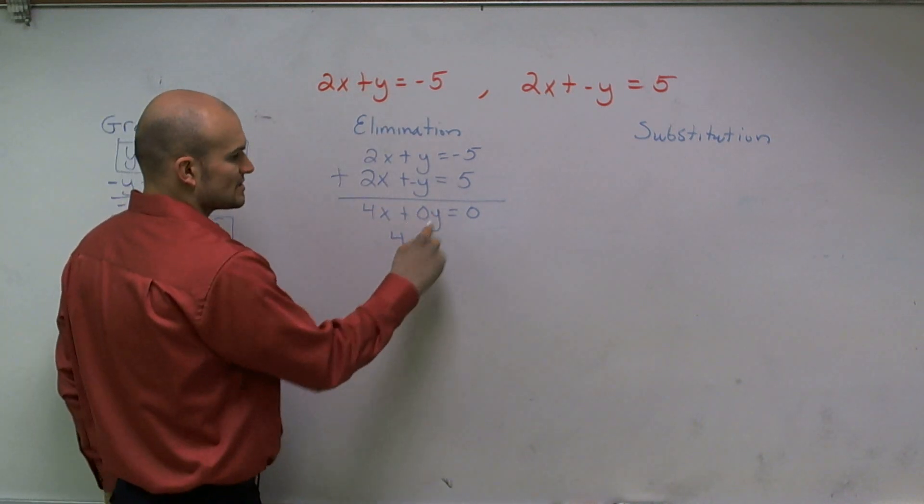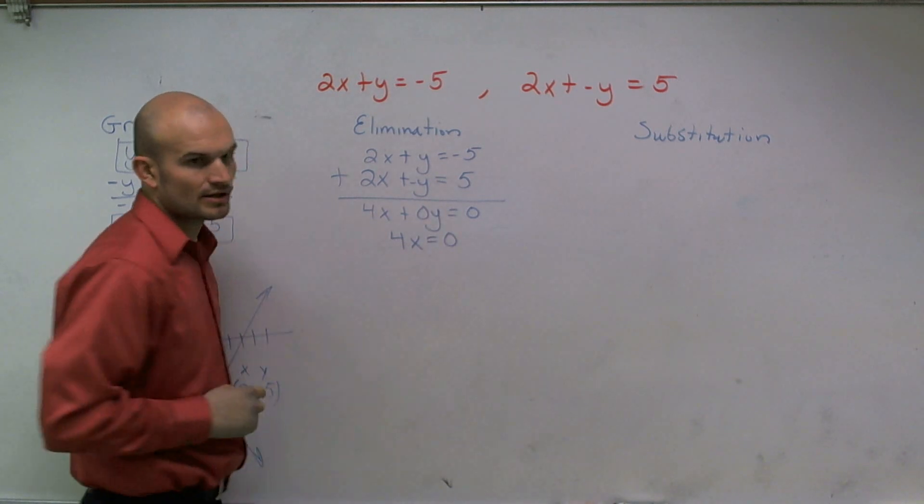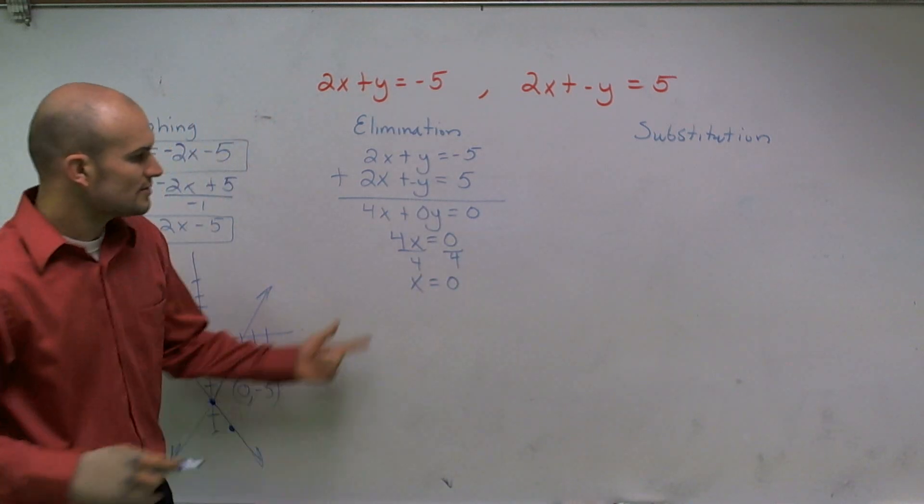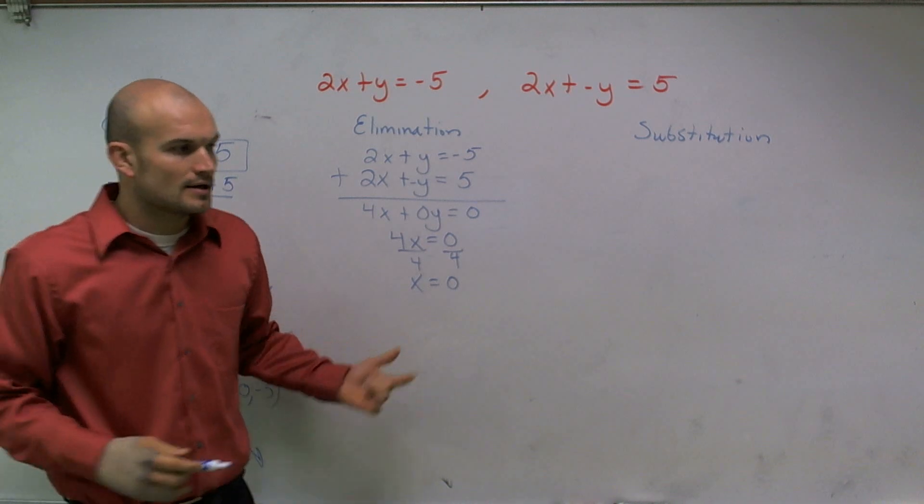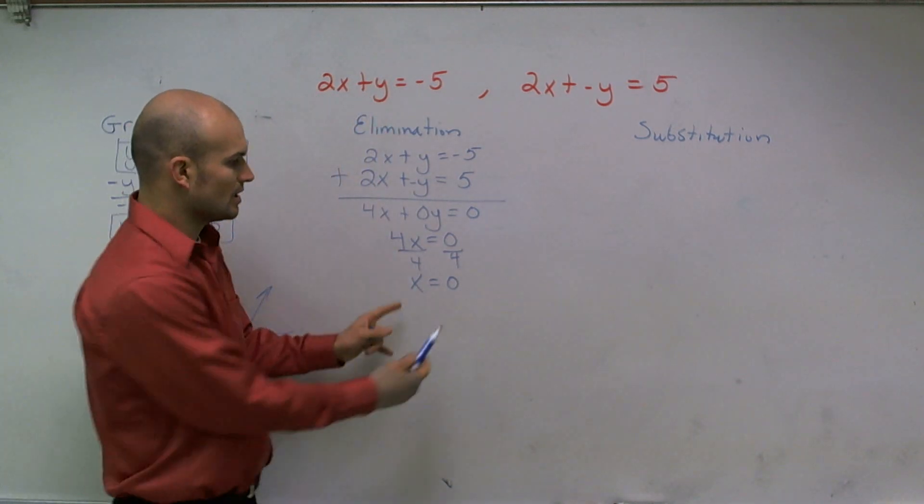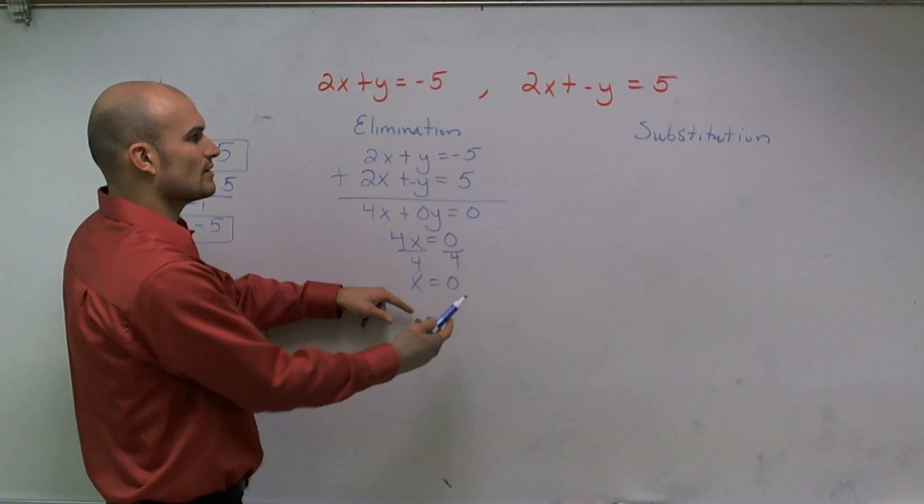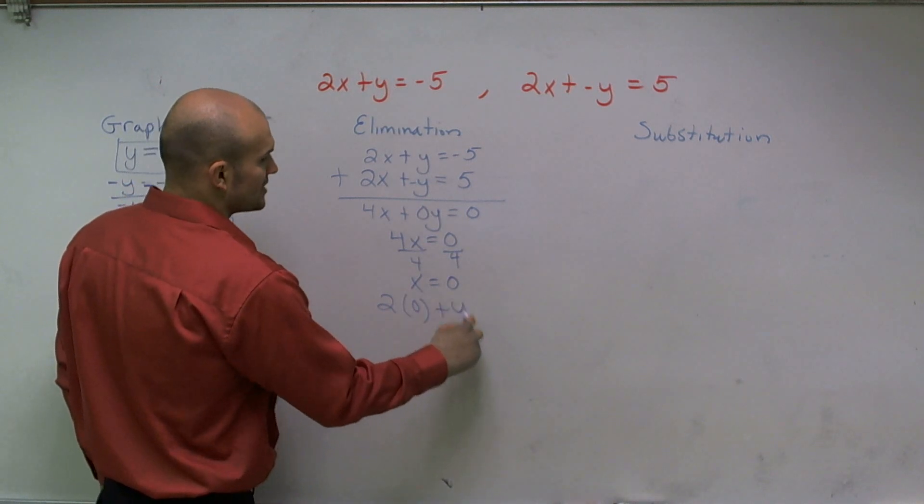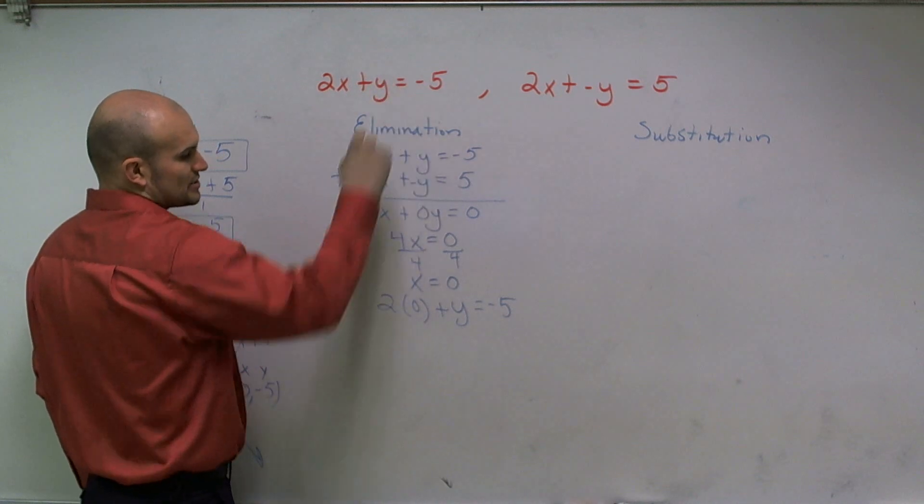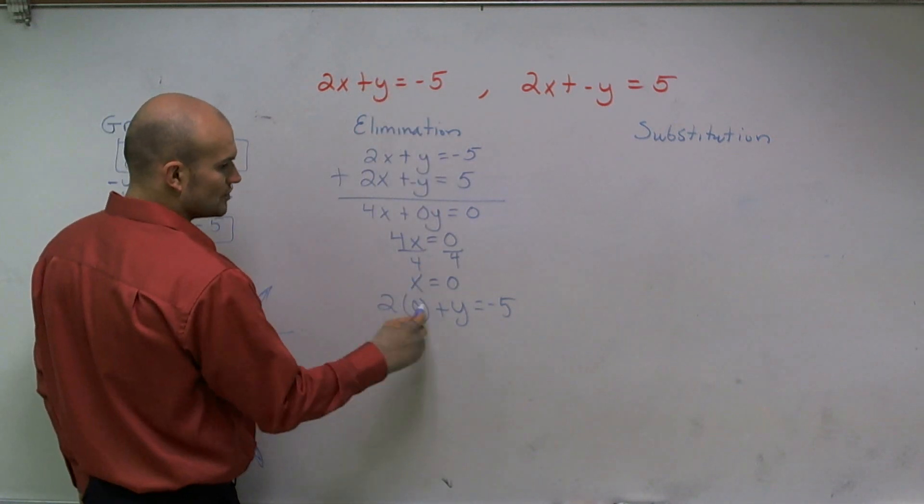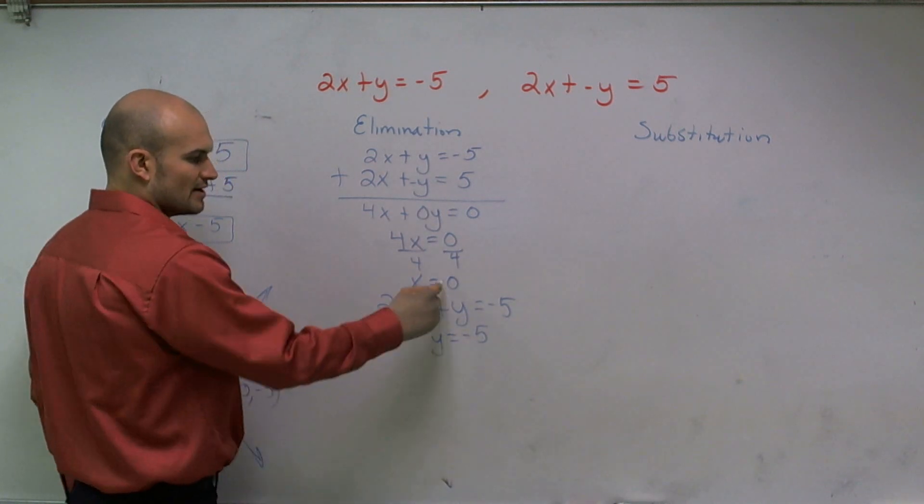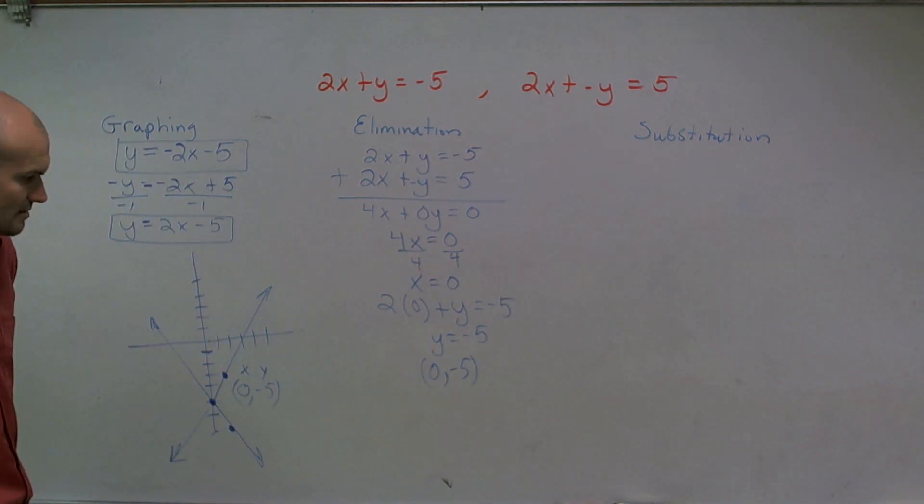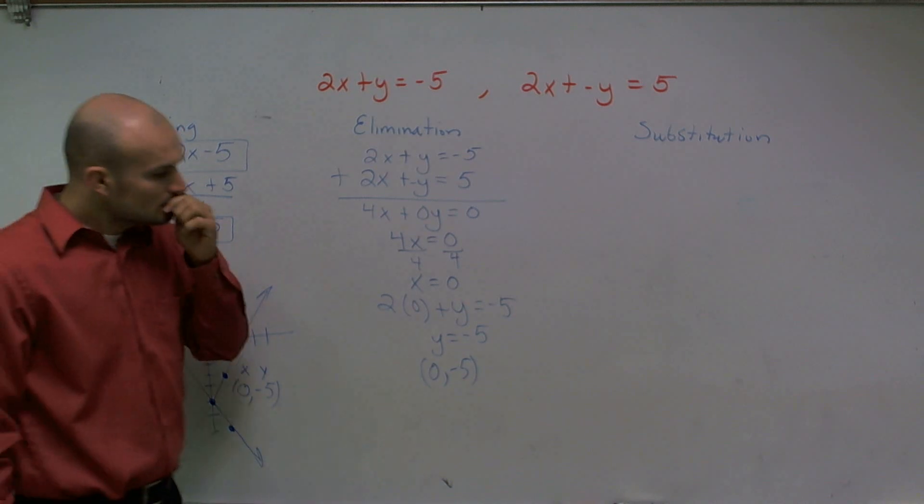I eliminate now the y because 0 times y is 0. So I have 4x equals 0, divide by 4, x equals 0. So now I know what x equals, I know x equals 0, right? So now I need to figure out, well, what is my y going to equal? Well, I can pick one of my two original equations. Since I know x equals 0, I'll plug that back in and solve for y. So right here, I have 2 times 0 plus y equals negative 5. I'm going to use this original equation up here. So I plug the 0 for x, 2 times 0 is 0, y equals negative 5. So therefore, I know what x and 0 of y is, so I can rewrite my new two points. Again, you notice they're exactly the same, right?